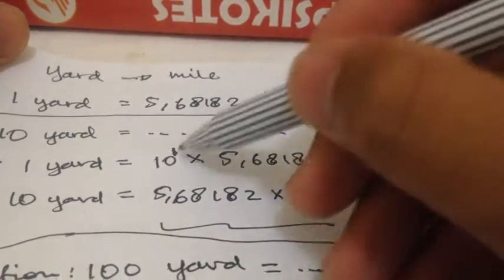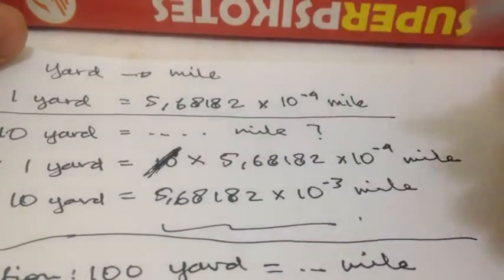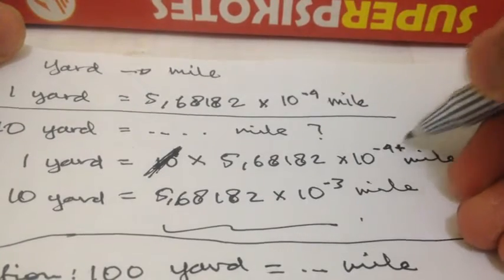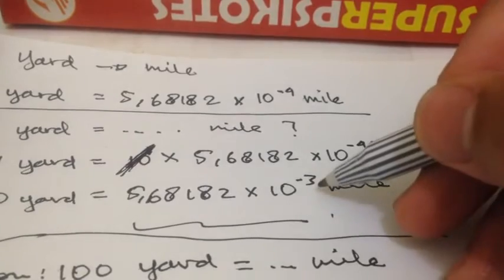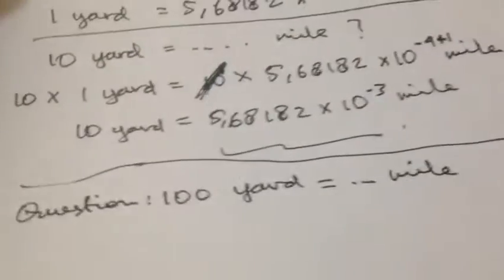So if we want to multiply it, we can take it off and then we can put it plus. Minus 4 plus 1 is equal to minus 3. That's the answer.